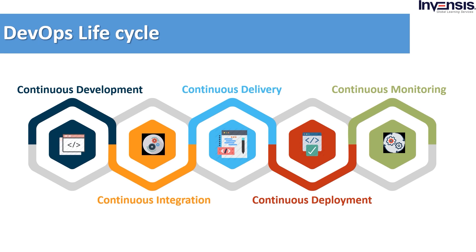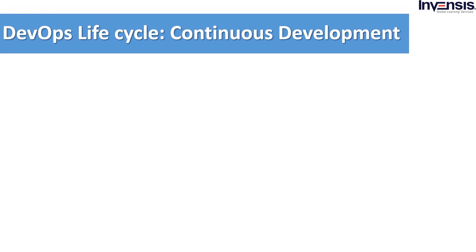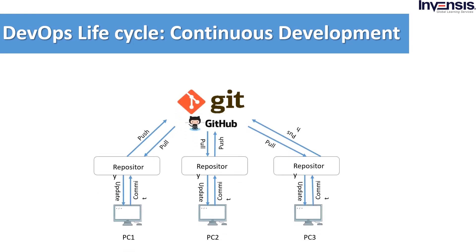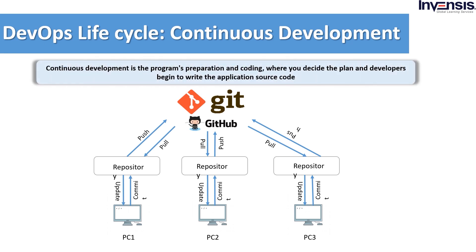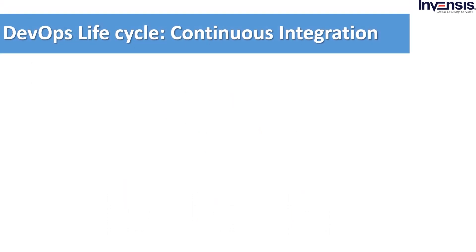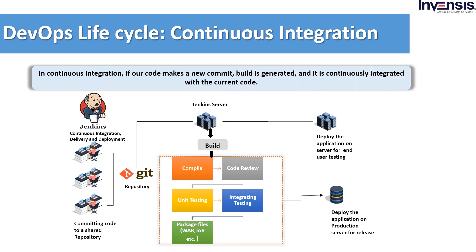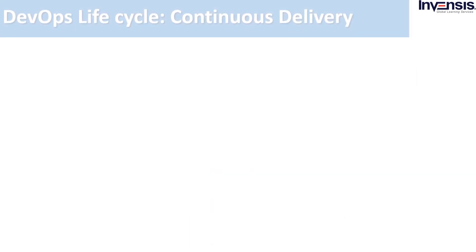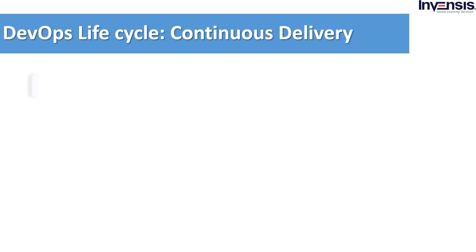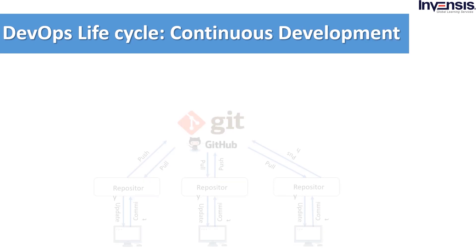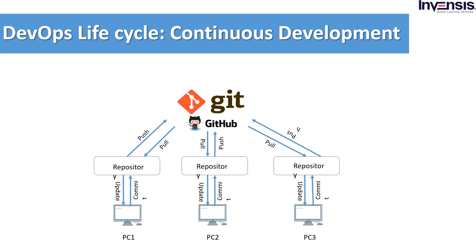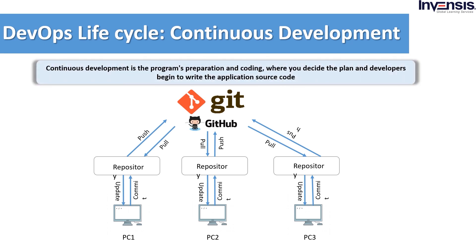Now let's see each phase in detail. Continuous development is where you decide the plan and developers begin to write the application source code. There are no DevOps tools for planning, but many tools are available to manage the code. The code is written in any language but maintained mostly with version control tools, and this process is known as source code management. It is a version control tool for distributed non-linear workflows that provides data protection for quality software development.